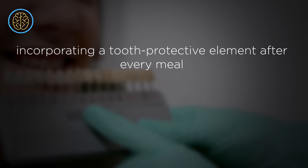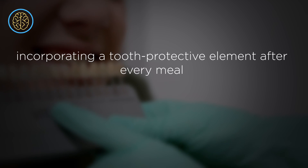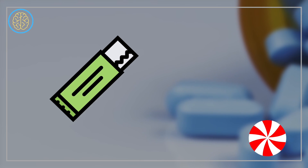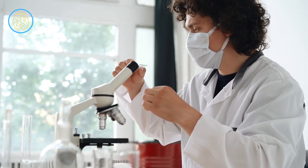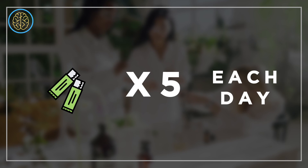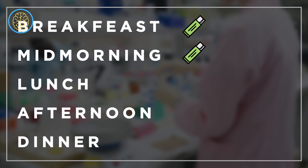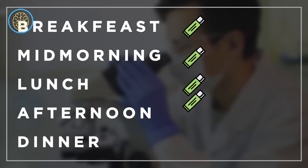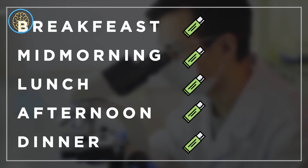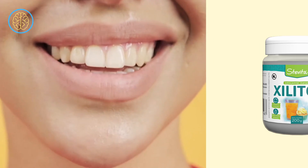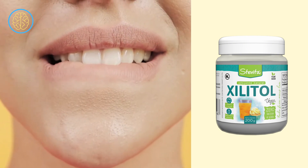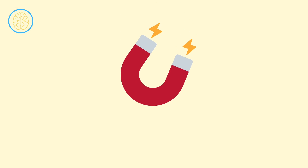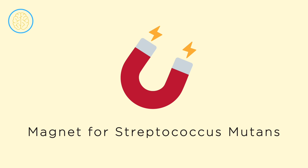The initial step involves incorporating a tooth-protective element after every meal, with the best option being xylitol. You can choose either the mint or the chewing gum, depending on your preference. Aim to take two xylitol gums five times a day. For optimal results, follow this schedule: have the first gum after breakfast, the second one mid-morning, the third after lunch, the fourth in the afternoon, and the fifth after dinner. One of the great things about xylitol is its immediate effectiveness upon entering your mouth — it acts like a magnet for Streptococcus mutans, helping you protect your teeth throughout the day.